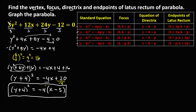From this standard equation, we can find the values for h, k, and p. h is associated with x — since this value is negative 5, h is the opposite sign, so h equals positive 5. k is associated with y — since this value is positive 4, k is the opposite sign, so k equals negative 4. For p, take the number outside and divide by 4: positive 4 divided by 4, so p equals 1.